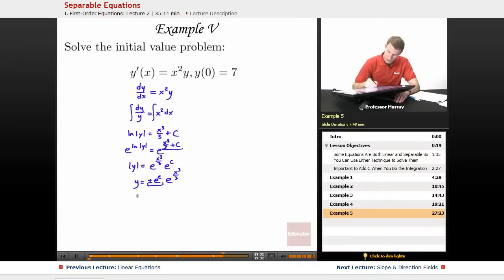And so, if I think of that as a single constant, I'm going to write that as k times e to the x cubed over 3, because e to a constant is still a constant, and plus or minus a constant is still a constant. So I've got y equals k e to the x cubed over 3. Now, that's the general solution to my differential equation. It's as much as I can derive just using the differential equation.